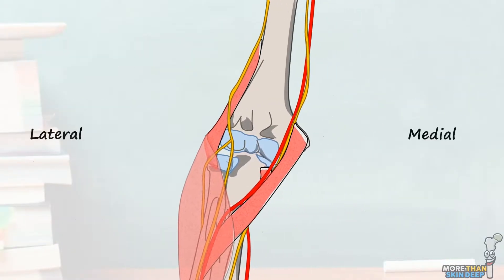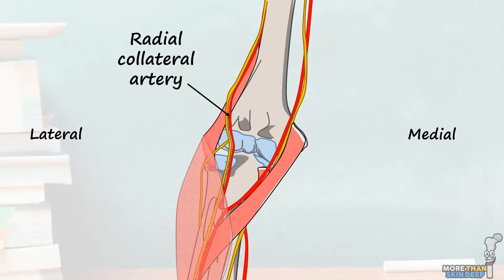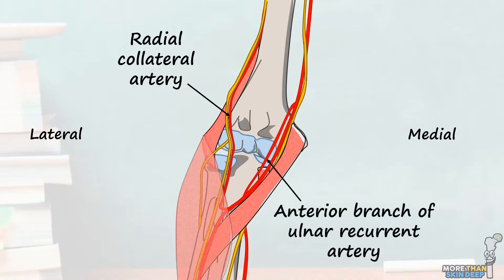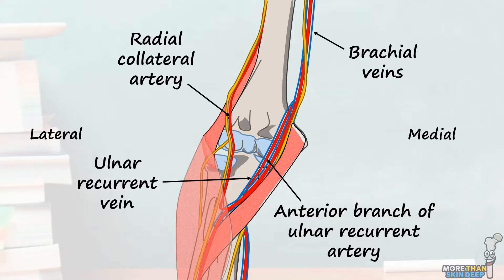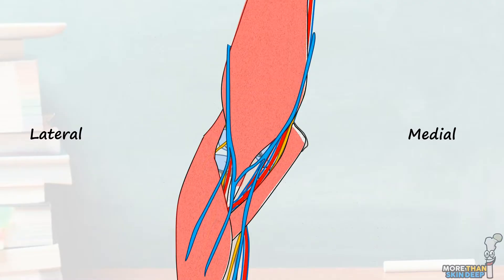Those are the most commonly examined contents of the cubital fossa, but there are a few other structures to be aware of. First is the radial collateral artery, a branch of the deep brachial artery, which runs alongside the radial nerve to join the radial artery. Next is the anterior branch of the ulnar recurrent artery, which runs behind the brachial artery and forms part of a network of anastomoses around the medial elbow. There are also important veins: the brachial veins, which are the vena comitans to the brachial artery, the ulnar recurrent vein, and an anastomosis of veins over the top of the cubital fossa utilised when taking blood from a patient.